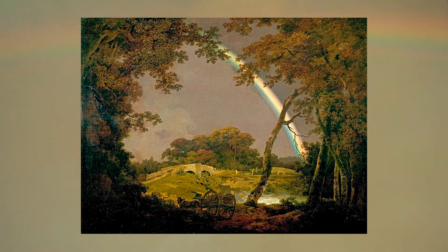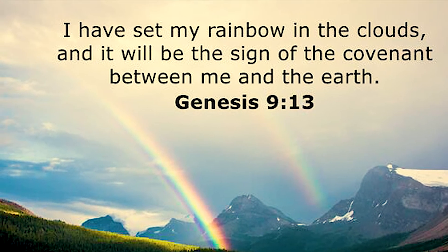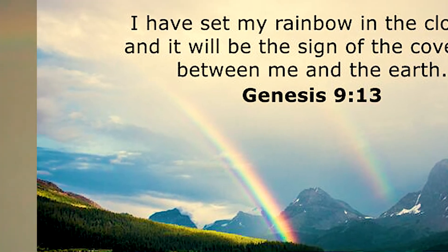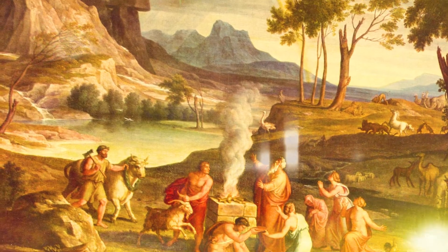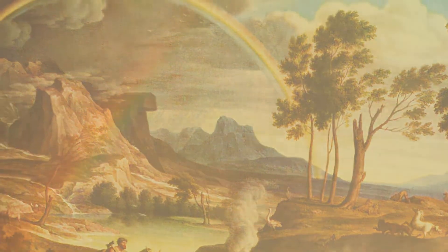Rainbows occur frequently in mythology and have been used in the arts. The first literary occurrence of a rainbow is in the book of Genesis chapter 9, as part of the flood story of Noah, where it is a sign of God's agreement to never destroy all life on earth with a global flood again.